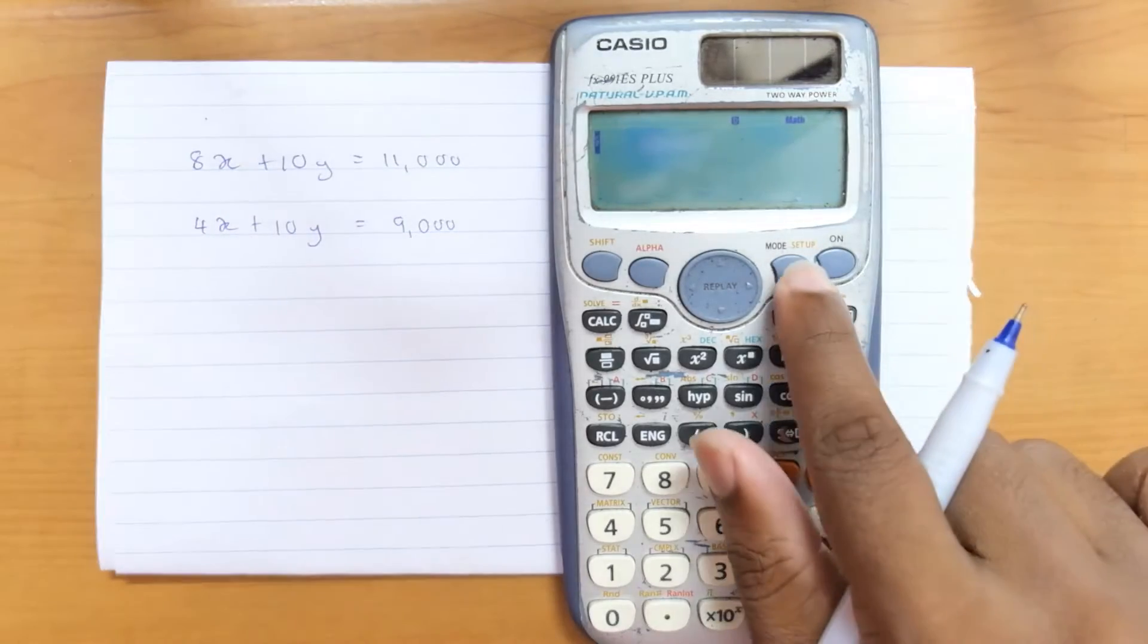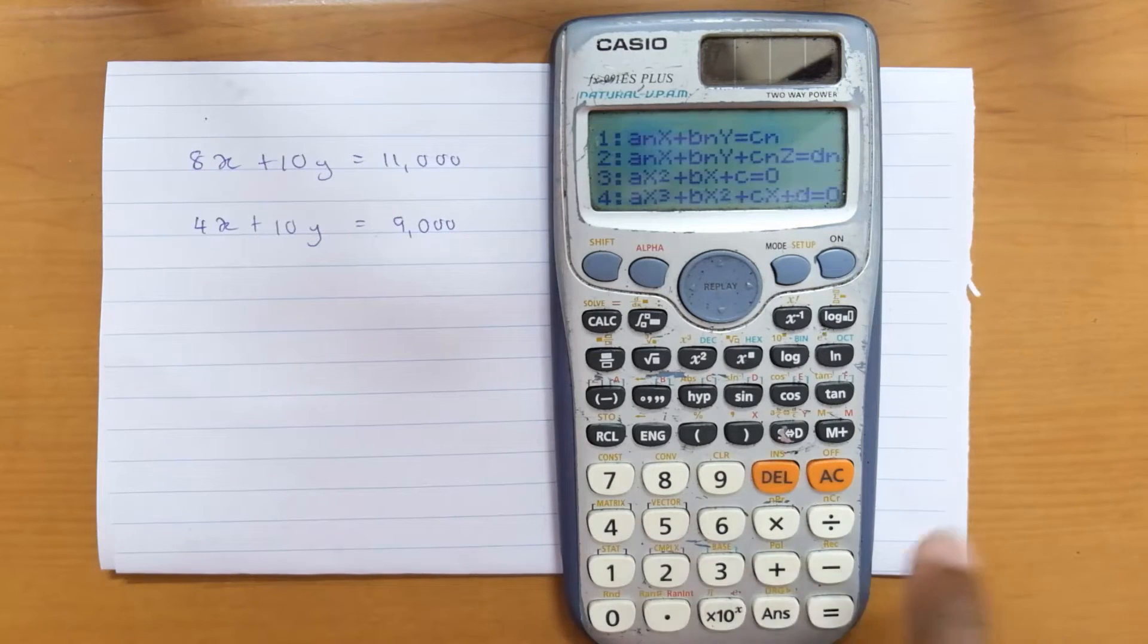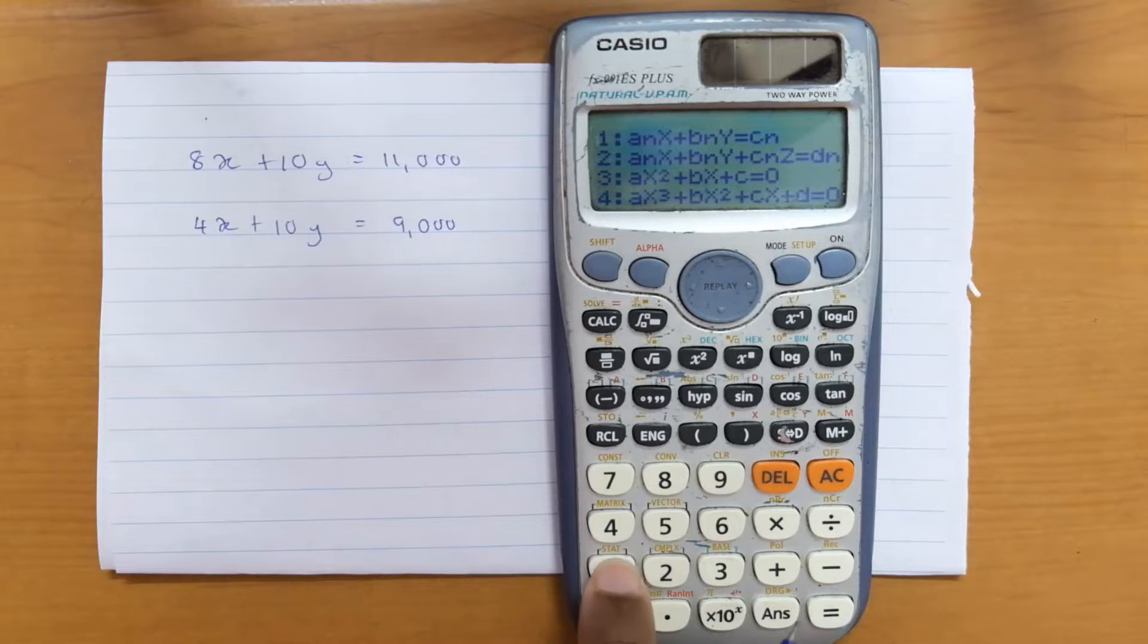The next step: press the mode button, then you have to see the EQN equation. It is number 5. Press number 5. Out of the options given, since it is a two-variable calculation, you have to select the first option.